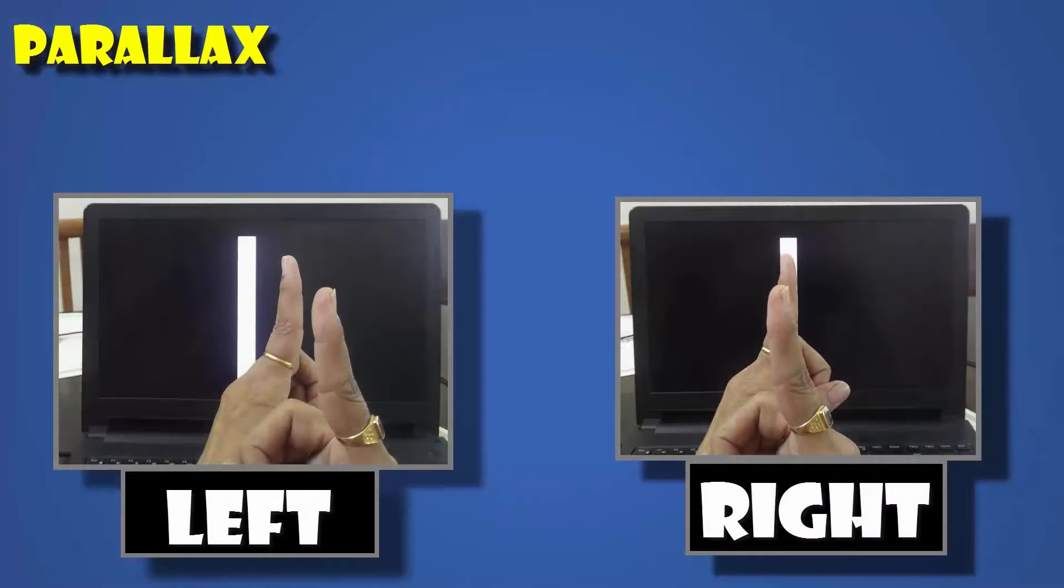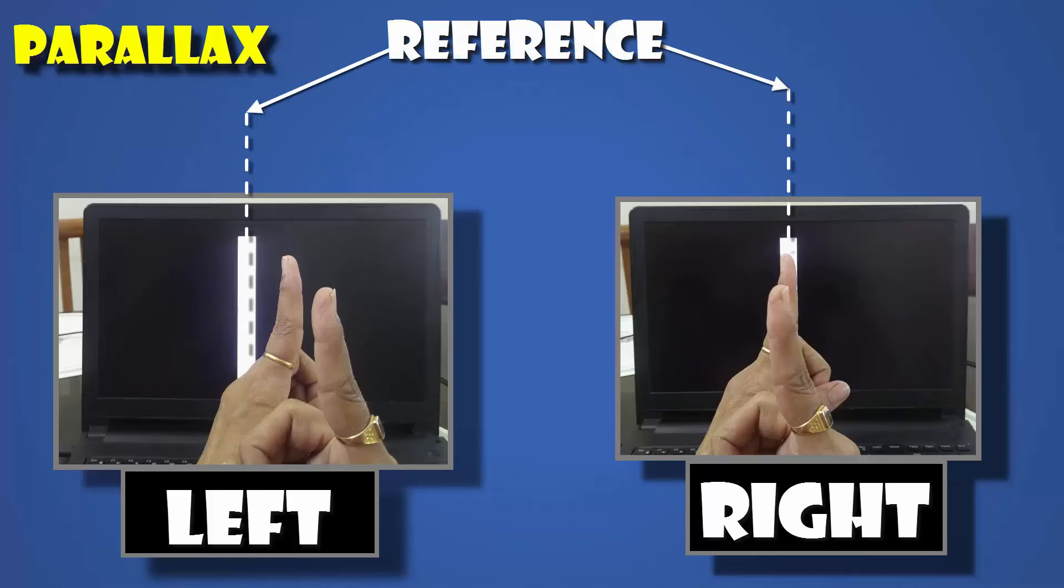The way it works is, you take any image as a reference. Here in this example, let's say the white line. Then consider this finger. This finger is shifted towards the right from the left eye's point of view. Thus, your brain understands that this finger is closer.